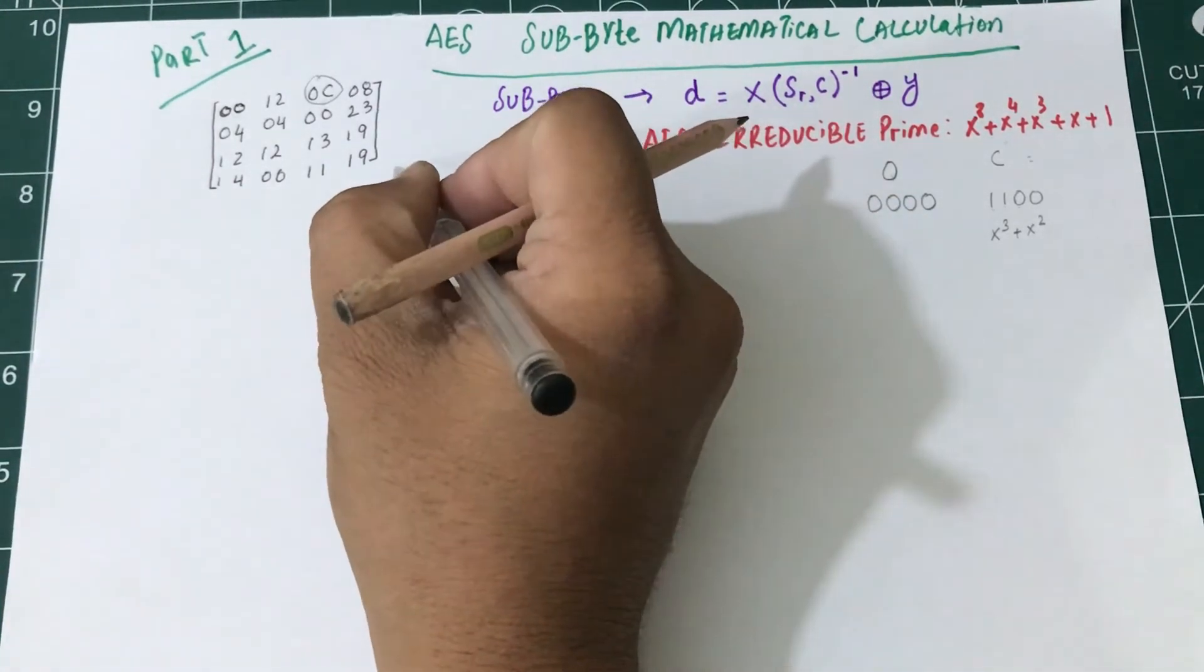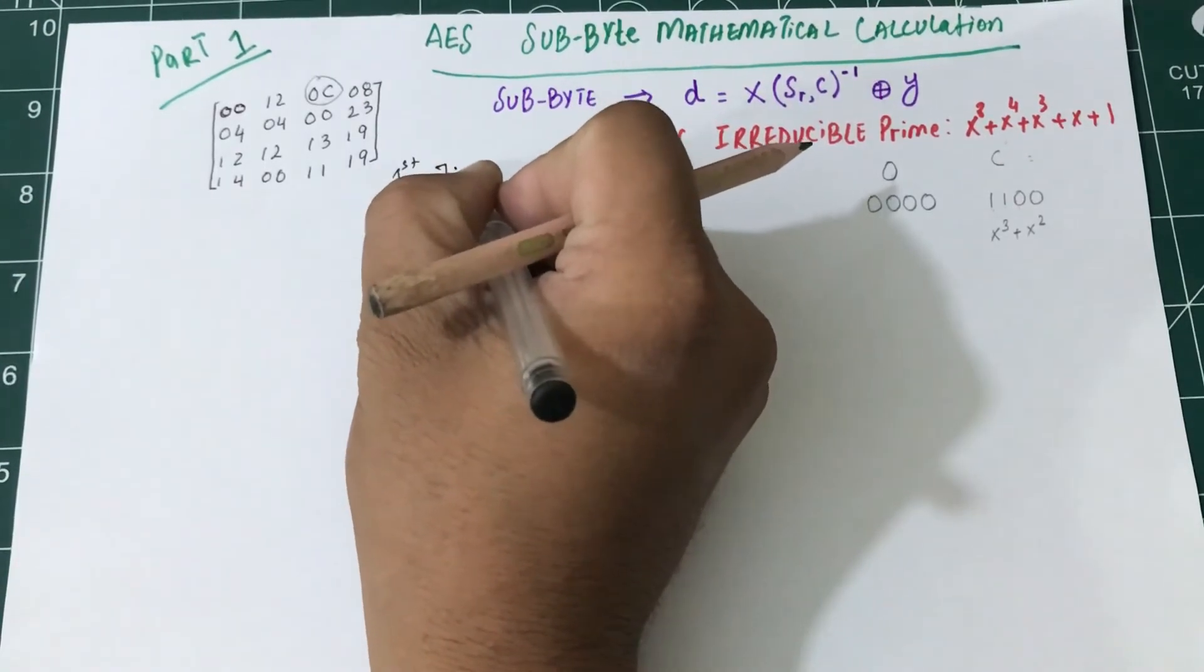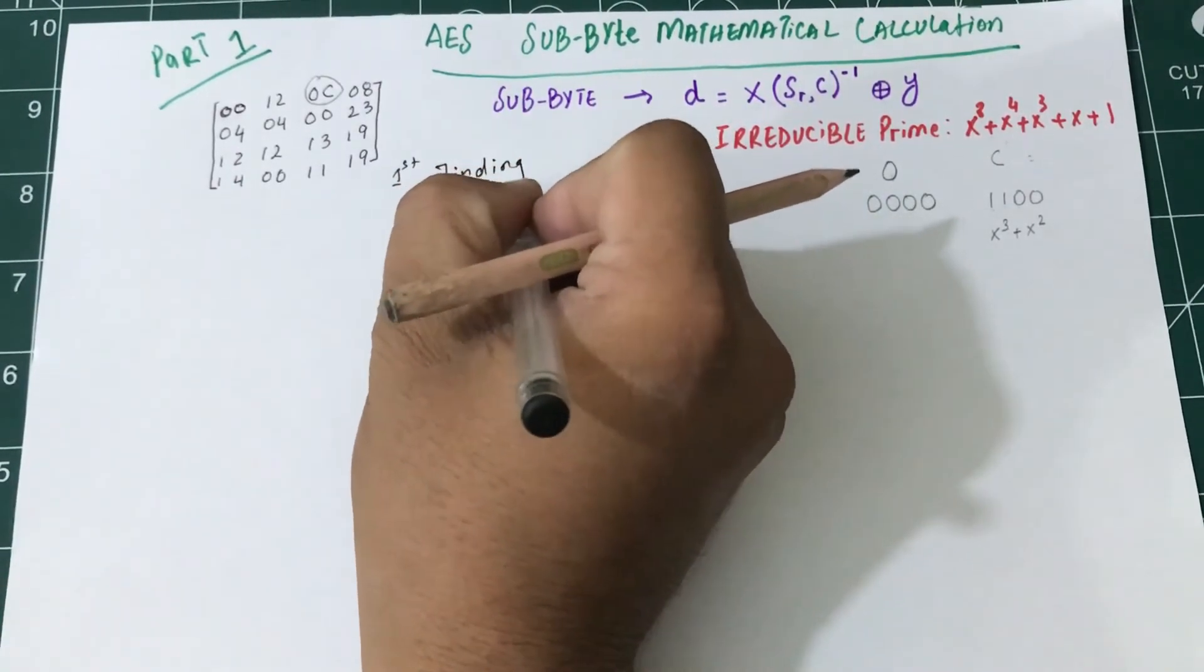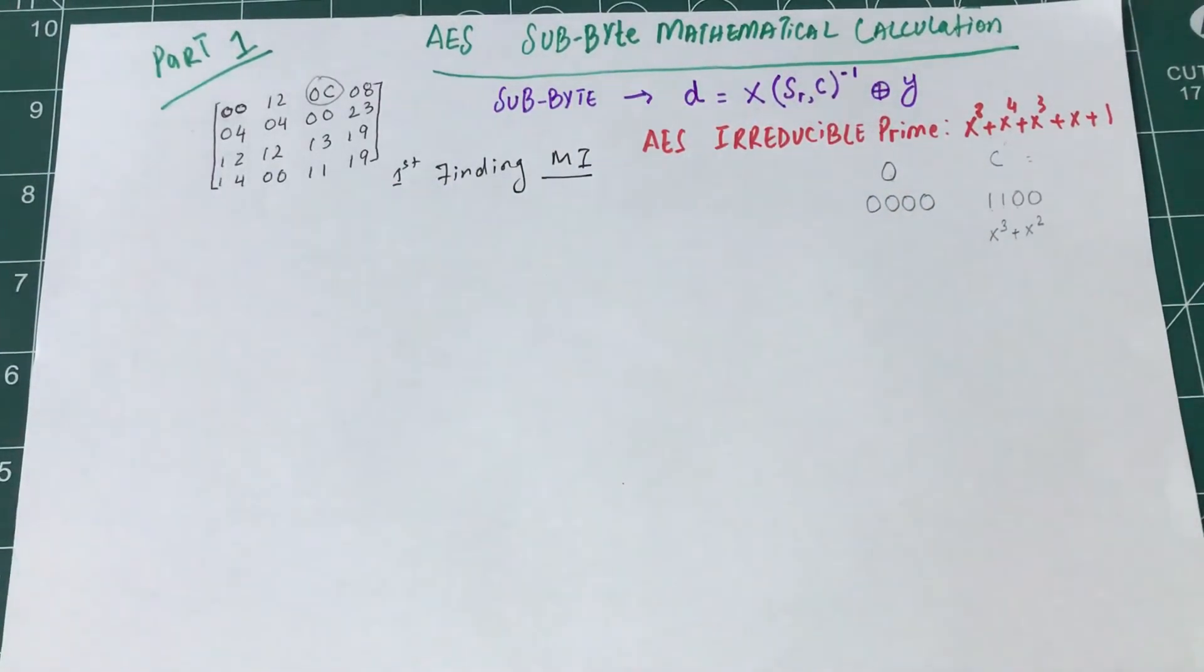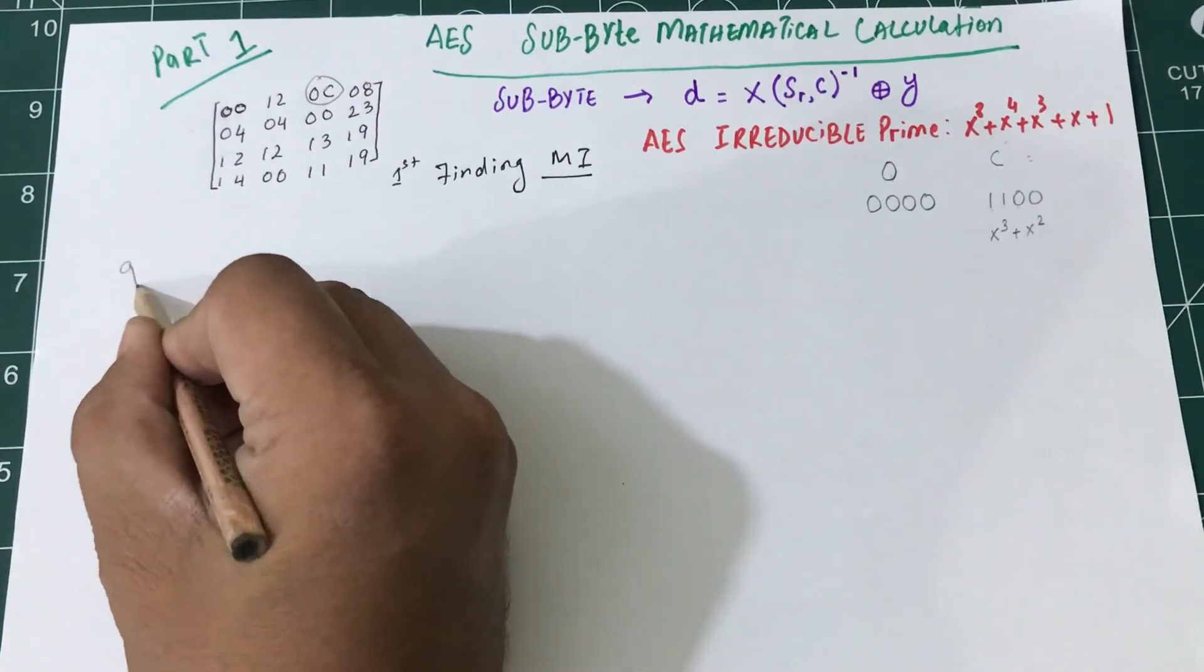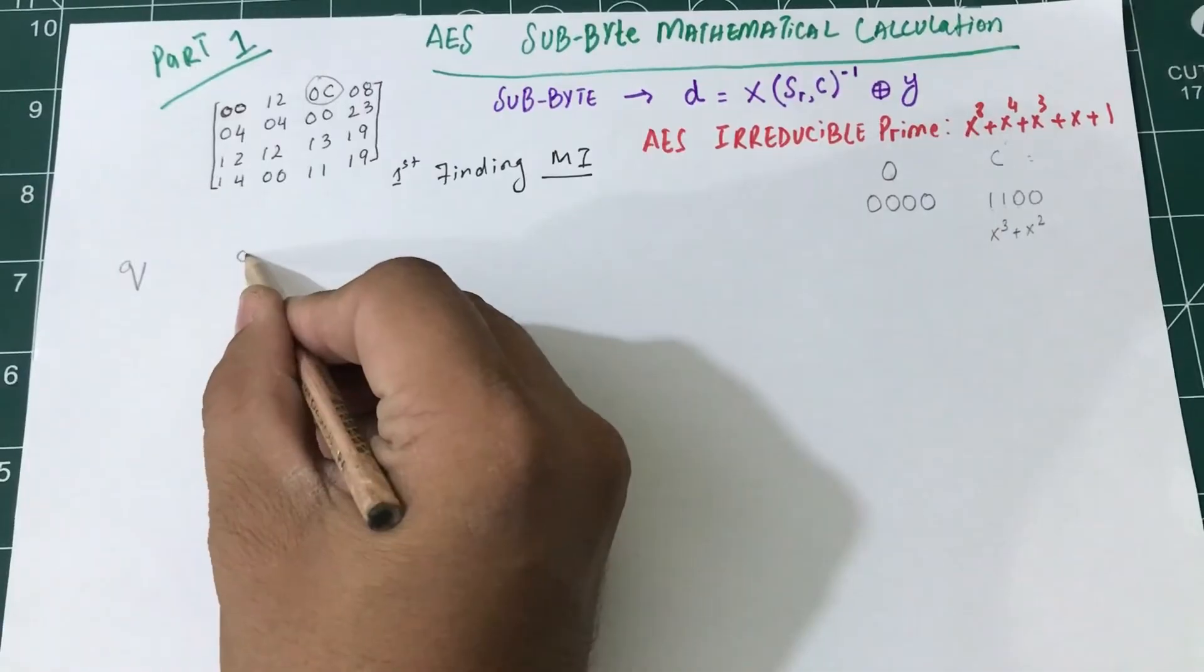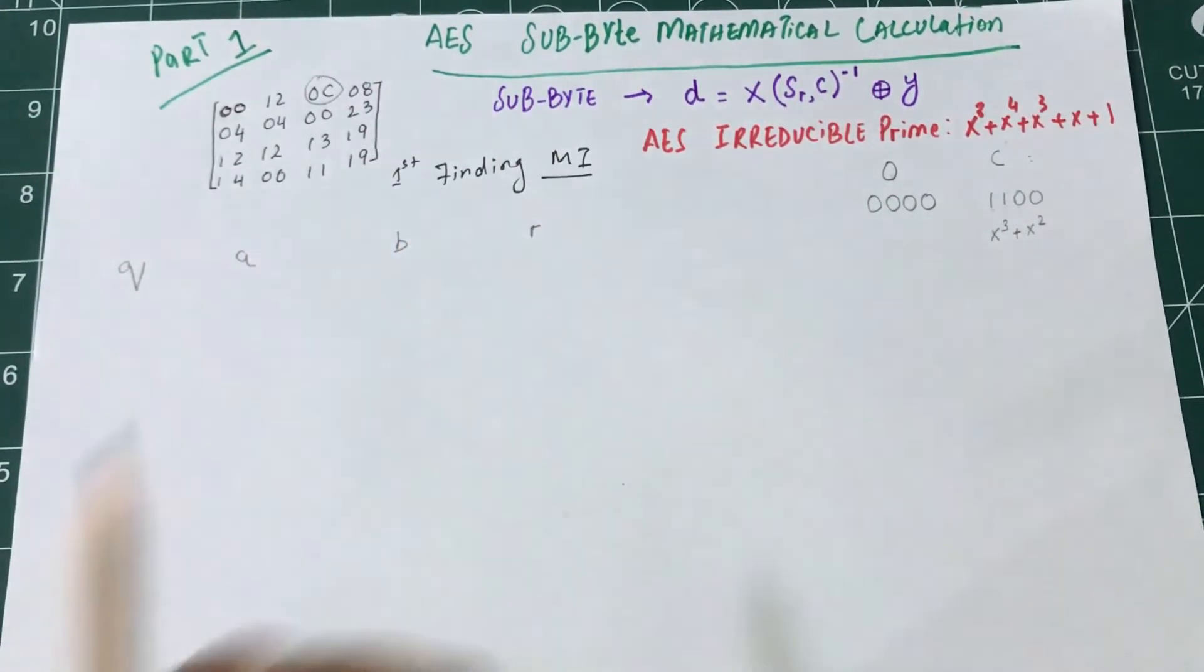The first step is finding the multiplicative inverse using the Extended Euclidean algorithm. Extended Euclidean algorithm says we have something called q, we have something called a, we have b, and we have remainder.